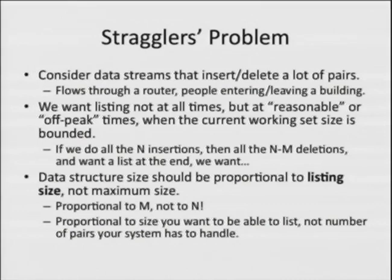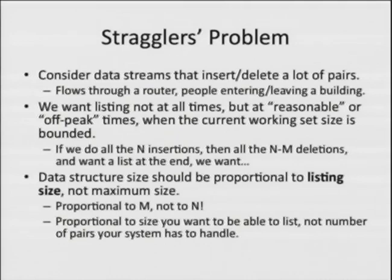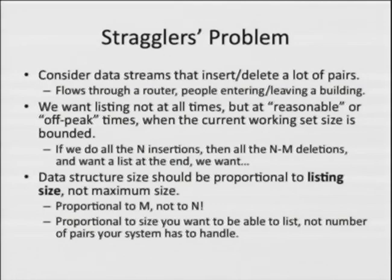One is called the stragglers problem. Think of it in networking as flows through a router, or in security applications as people entering and leaving a building. People enter over time; at the end of the day people leave. You'd like to make sure everybody's left or recover who's still there. You could keep a big list of everyone who entered, but that's wasteful — you're keeping a long list when the information you want is a very small number of people still in the building. You'd like a data structure whose size is proportional to the number of people left, not the entire list.